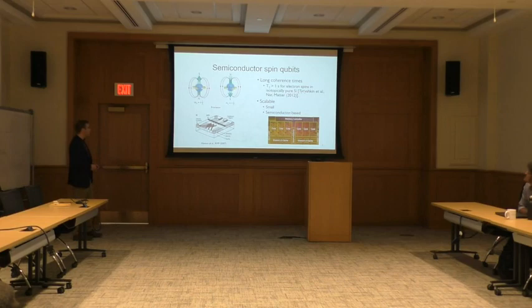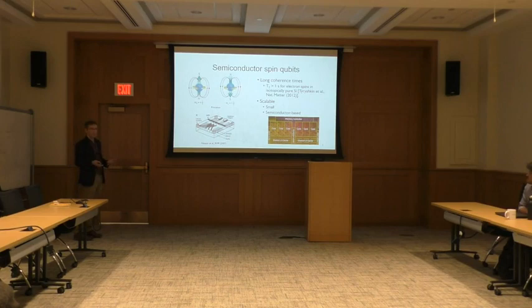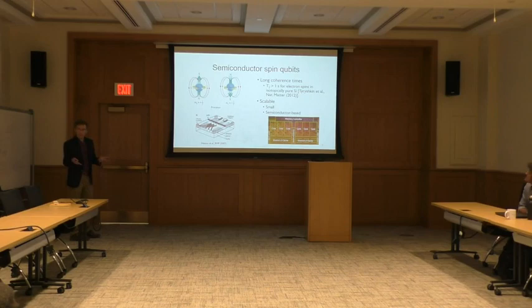One typically achieves this in practice by using something called a gate-defined quantum dot. The idea is to start with a layered semiconductor heterostructure — in this case, gallium arsenide and aluminum gallium arsenide. At the interface between these two layers there is a sheet of free electrons, called a two-dimensional electron gas or 2-DEG. By using lithographically patterned metal gates on the surface and applying negative voltages, you can selectively deplete parts of the 2-DEG and confine a discrete number of electrons in a small place. This is a quantum dot.